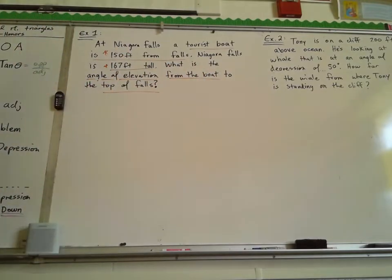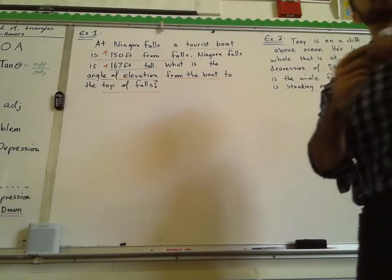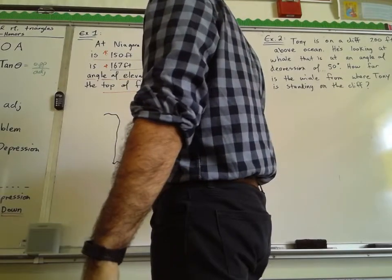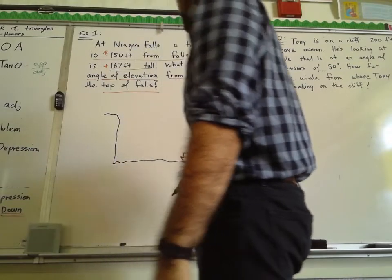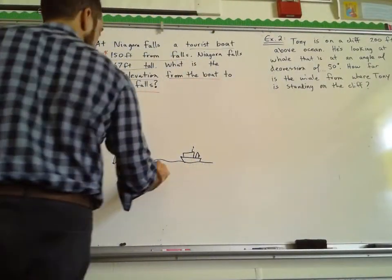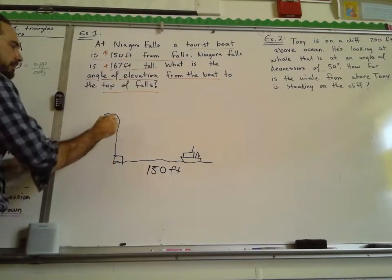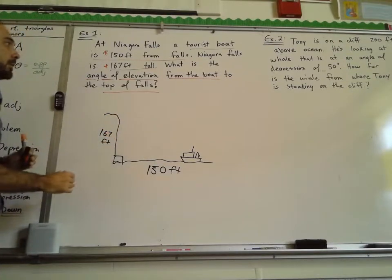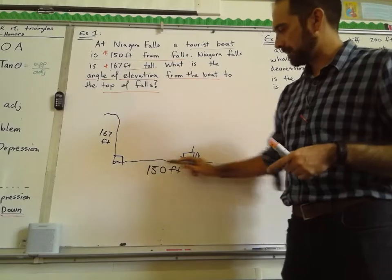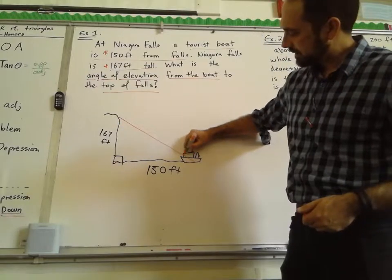So we need to draw a picture — that's going to help us. Here's Niagara Falls, here's the water, here's the boat. The tourist boat is 150 feet from the falls. It's a right angle because the water is going up — a right angle from the falls. The falls is 167 feet tall. We want to know the angle of elevation from the boat to the top of the falls. I have the boat 150 feet away, and this line will be our angle of elevation — how far up I need to look.